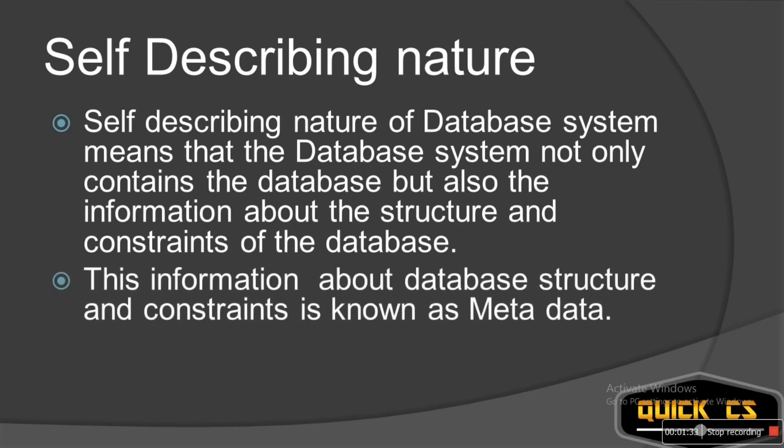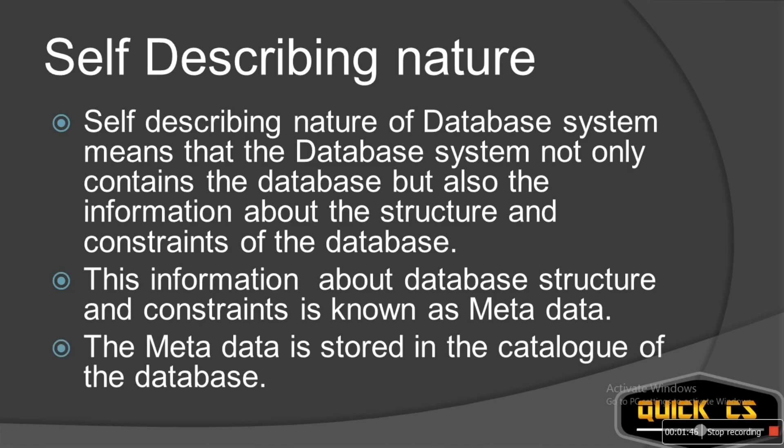Now where is this information stored and what is it called? The information about constraints and the structure of the database is known as the metadata. Metadata is stored in something called the catalog. A general database system is created not for some specific application but for general uses. So developers of the application or program need to know about the structure and constraints of the database so that they can create the program around it. Hence to get this information, they need to reference the metadata, which is stored in the catalog of the database.